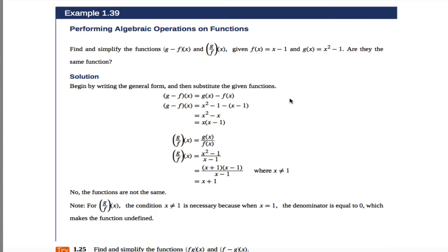Here's example 1.39 from section 4.1.4 of the OpenStax pre-calculus book. We're given a couple of functions, f of x is x minus 1 and g of x is x squared minus 1.